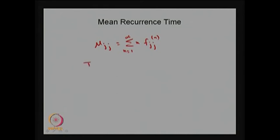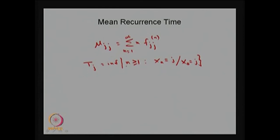The same thing can be obtained by introducing the random variable T_j, defined as the infimum of n greater than or equal to 1 such that X_n equals state j given that X_0 was state j. This is the random variable denoting the first return time to state j — that is, the first integer n at which you return to state j starting from state j.